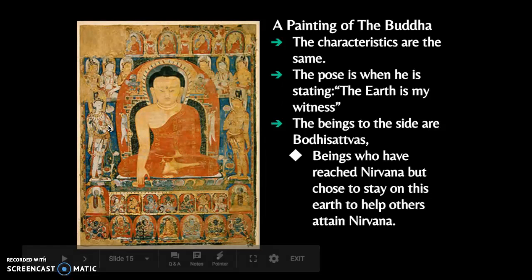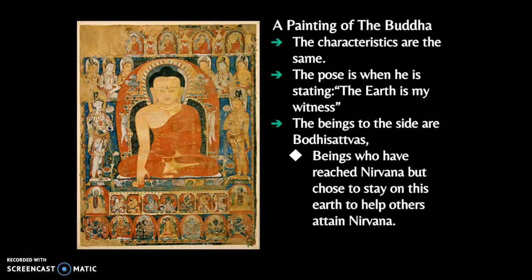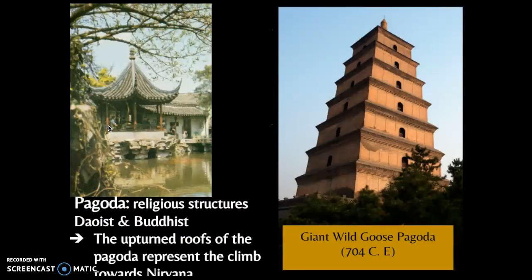Remember, bodhisattvas were people who had achieved enlightenment — they could have reached nirvana — but chose to stay behind and help other people attain nirvana and enlightenment.